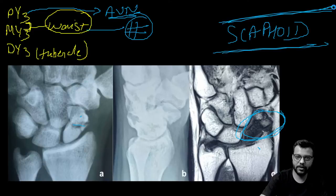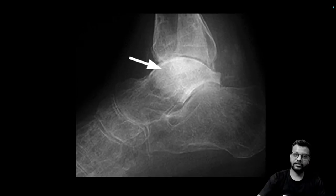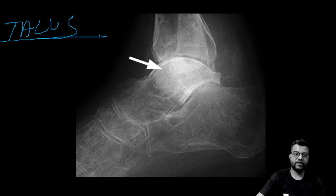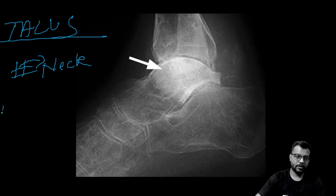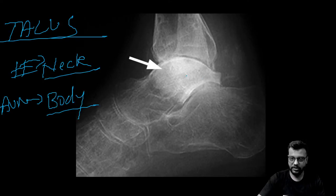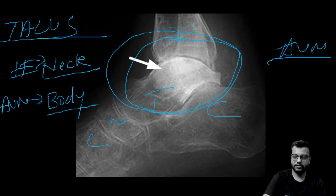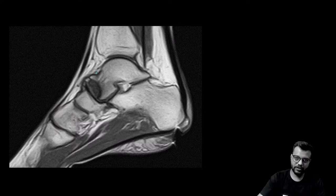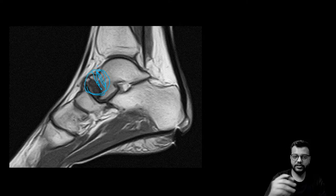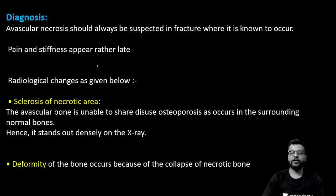The third most common bone with AVN is the talus. A fracture through the neck of the talus leads to AVN of the entire body of the talus. On images, you can identify the talus, calcaneum, tibia, navicular, and cuneiform. Classical AVN of the talus is visible on MRI, with the necrosis setting in progressively at the body following a neck fracture.